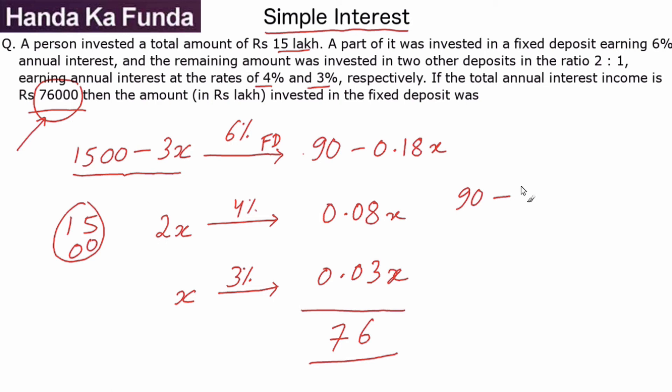Which is given to me as 76. So this gives me the value as 0.07x.